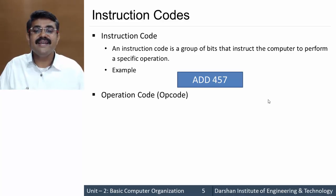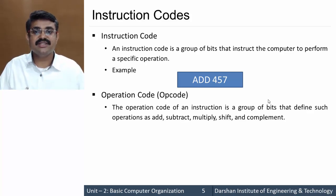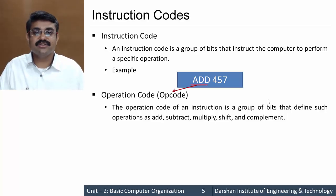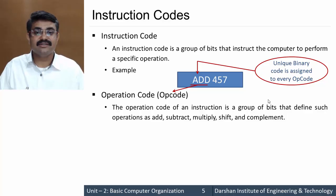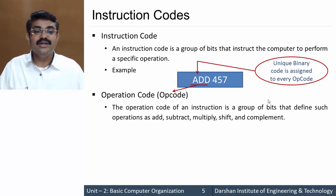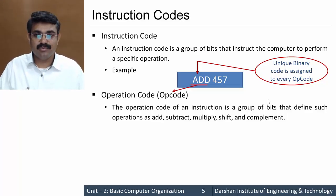Out of 'ADD 457', ADD is the operation code. The operation code of an instruction is a group of bits that defines operations like addition, subtraction, multiplication, complement, shift, etc. So ADD is the operation code and 457 is the address of the operand in memory. These operation codes are designated with unique binary codes which cannot be changed — they are fixed at the time of designing the computer.